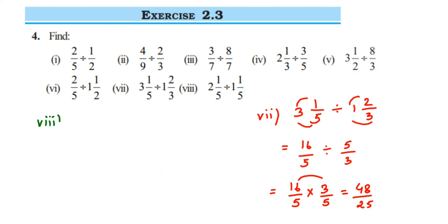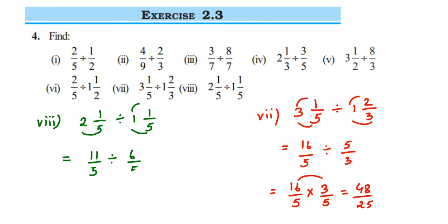Eighth question: 2 and 1 by 5 divided by 1 and 1 by 5. Convert both mixed fractions: 2 fives are 10, 10 plus 1 is 11, giving 11 by 5. Then 5 ones are 5, 5 plus 1 is 6, giving 6 by 5. So: 11 by 5, division becomes multiplication, take the reciprocal of 6 by 5 which is 5 by 6. Cancel 5 and 5.